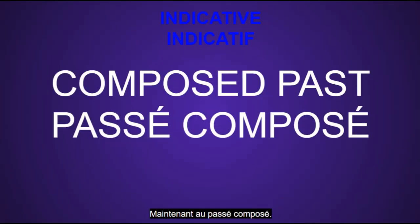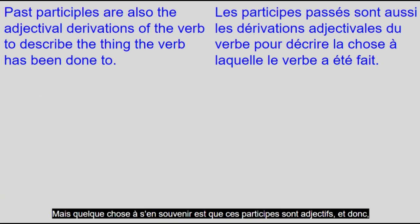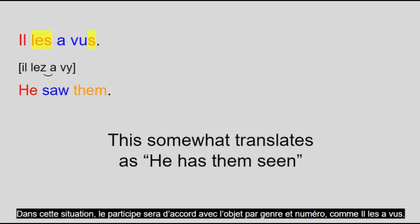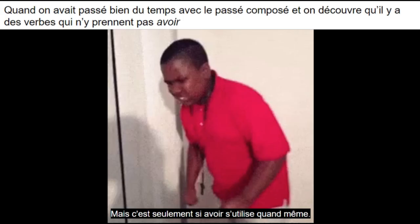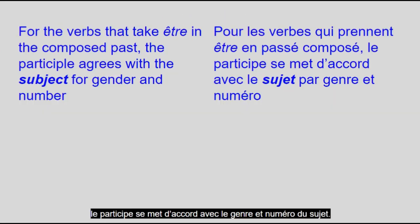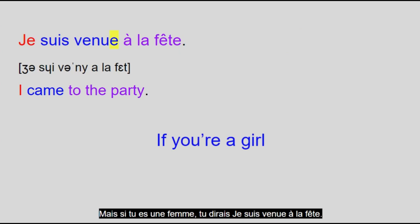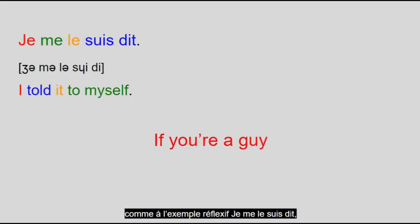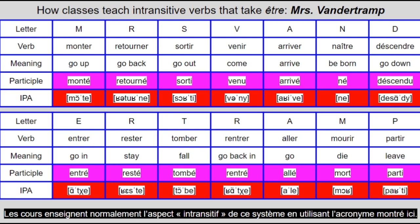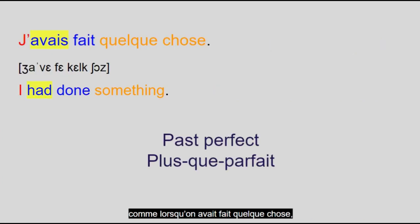Now for the passé composé. As mentioned, you take the conjugated present tense form of avoir, and then the past participle of the action verb. Here are the regular formations of those. Something to remember though, is that these participles are adjectives and therefore they can get inflected for gender and number. This happens if they have an object preceding them in the sentence — the participle will agree with the object in gender and number. That's only if avoir is being used anyway. In verbs that are either reflexive or intransitive, you would use être instead of avoir. And when you use être, the participle agrees to the gender and number of the subject. For an intransitive example: je suis venu à la fête. But if you're a girl, you'd say je suis venue à la fête. The composed tenses using avoir also extend to other tenses when they have meanings like 'when you had done something,' 'will have done something,' 'would have done something,' etc.